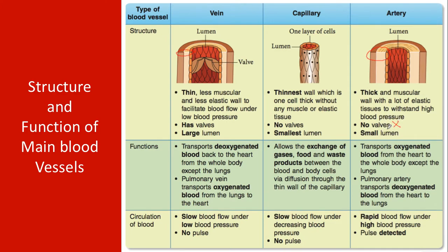The artery has a small lumen — the lumen is the internal space of the tubular structure. The lumen is smaller compared to the vein, but the wall is much thicker. The function of the artery is to transport oxygenated blood from the heart to the whole body, except the lungs, because oxygenated blood from the lungs is transported by the pulmonary vein.